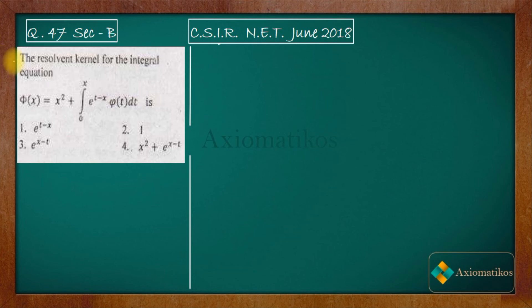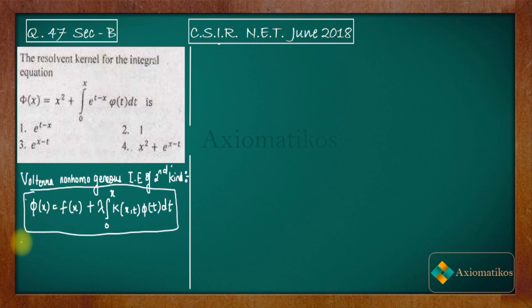We have to find the resolvent kernel for the given integral equation. Firstly, I want to show you a note, and using that note we can solve this problem easily. This is called a Volterra non-homogeneous integral equation of second kind. The given equation has the same format, so it is a Volterra equation — a non-homogeneous equation of second kind.